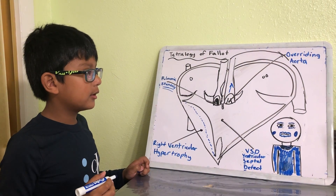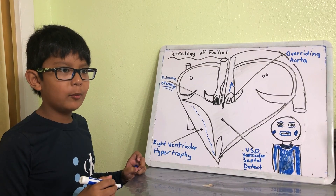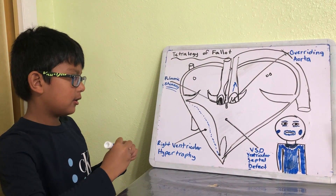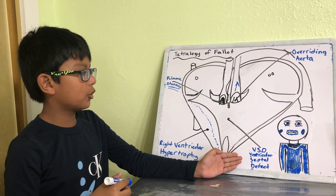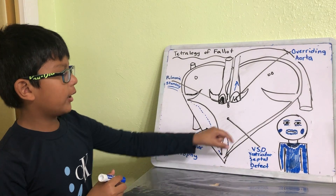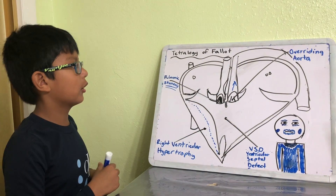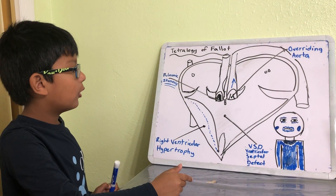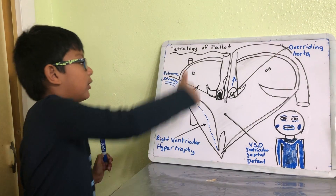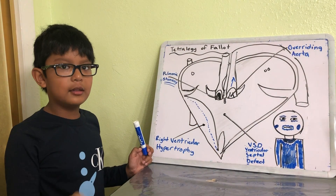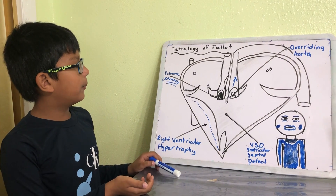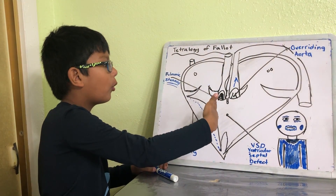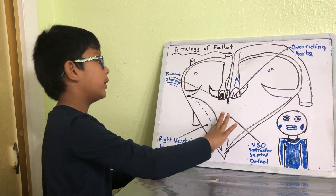Last but not least, and probably one of the most dangerous of them, we have a VSD, which is a ventricular septal defect. It kind of tells you the location — ventricular, so it's located between the bottom chambers. Septal comes from septum, which is this wall here. And defect is an abnormality in structure, so basically we get a hole in between the ventricles.